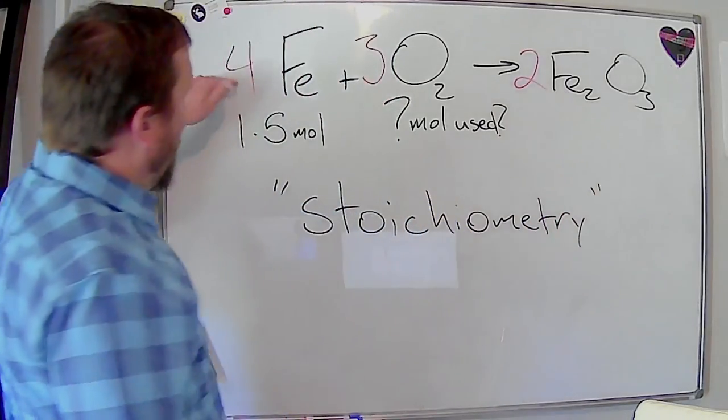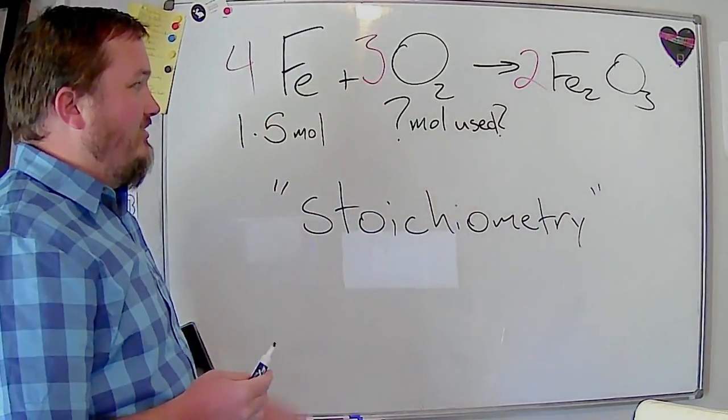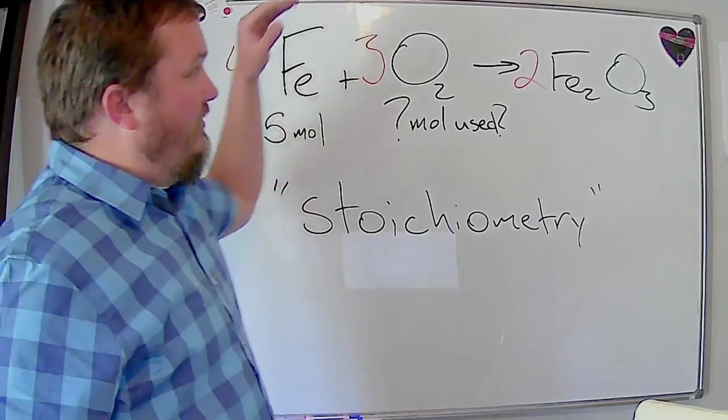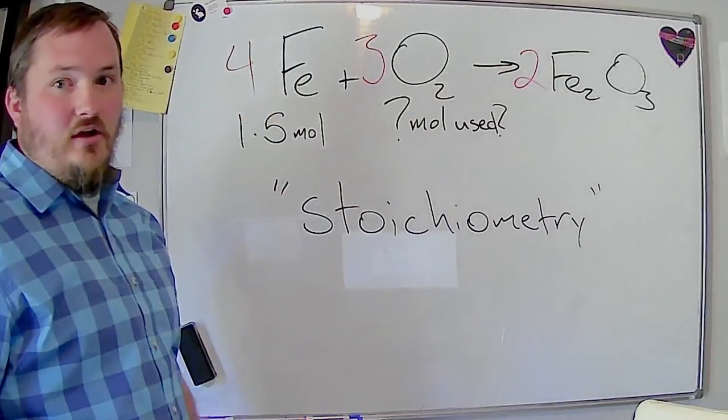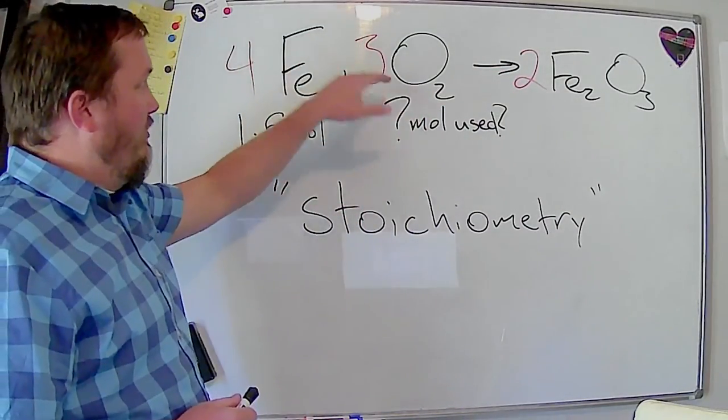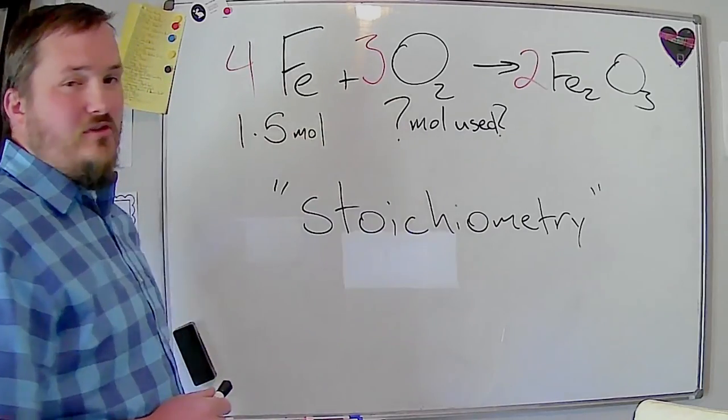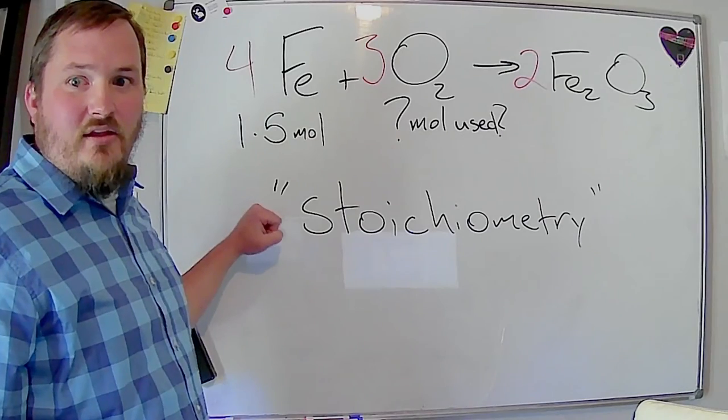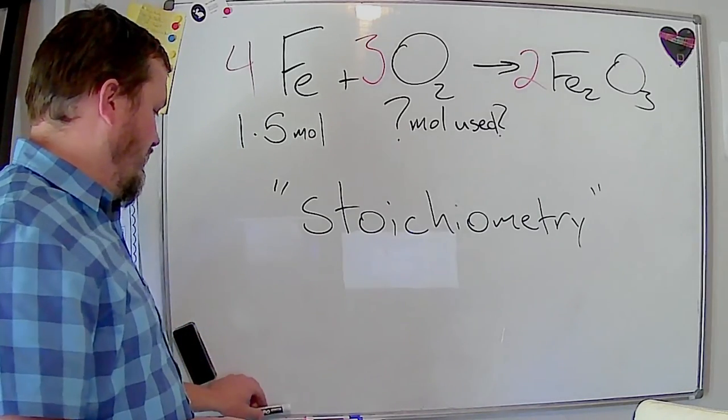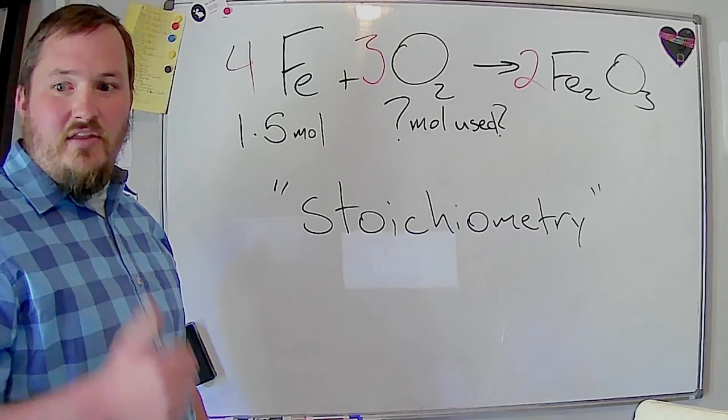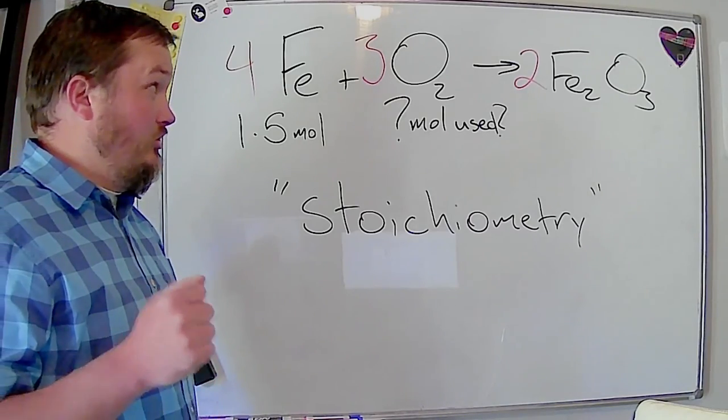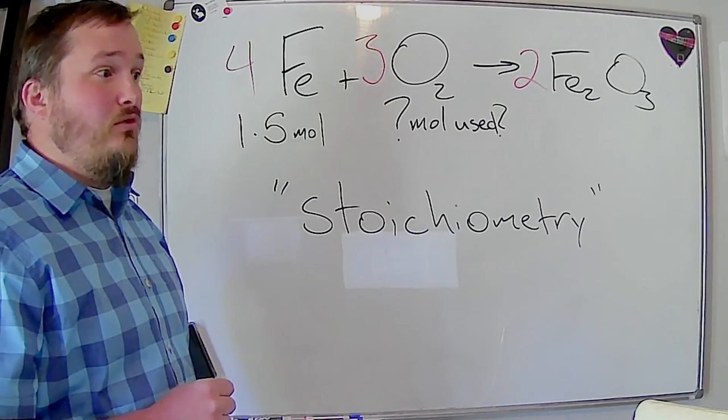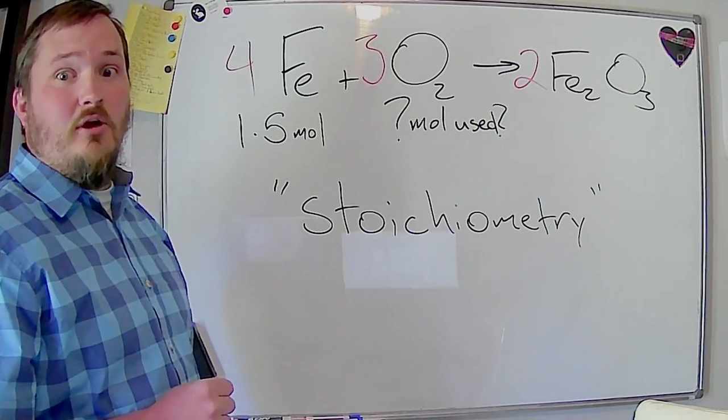Anytime you're using coefficients as a conversion factor that is stoichiometry and that's all it is, is saying it's that idea that you can say for every two moles of product I need four moles of iron or for every three moles of oxygen I'm going to use four moles of iron. Any way we want to combine those coefficients when we do that it's called stoichiometry. All right, and with that I think that's all you need to at least give it a good try between this video and the key that's available and we'll go through these problems on Monday in class. Have a good weekend everyone.